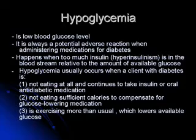Hypoglycemia is low blood glucose level. It is always a potential adverse reaction when administering medications for diabetes. It happens when too much insulin or hyperinsulinism is in the bloodstream relative to the amount of available glucose. Hypoglycemia usually occurs when a client with diabetes is: 1) not eating at all and continues to take insulin or oral anti-diabetic medication; 2) not eating sufficient calories to compensate for glucose-lowering medication; and 3) exercising more than usual, which lowers available glucose.